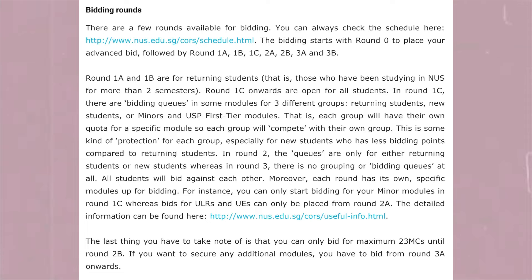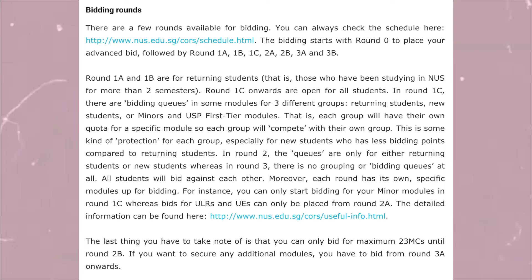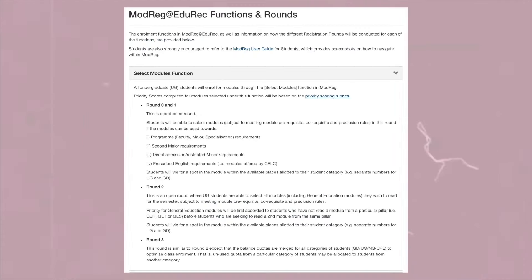Each round also has its own specific modules available for bidding. For instance, you can only start bidding for minor modules in Round 1C, whereas bids for ULORs or UEs can be placed from Round 2A. Detailed information can be found in the schedule. Also note that you can only bid for a maximum of 23 MCs until Round 2B. If you want additional modules, you have to bid from Round 3A onwards. Round 1 is basically for your most important modules, so make sure you prioritize those.